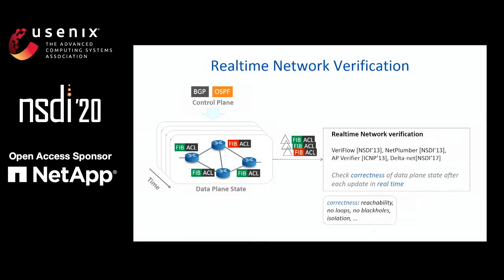In this talk, we focus on real-time network verification, which checks whether the data plane state, like FIPs or ACLs, satisfies some correctness properties. The correctness properties can include reachability, no black holes, no loops, and so on.